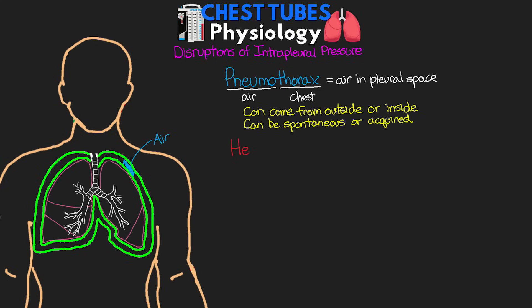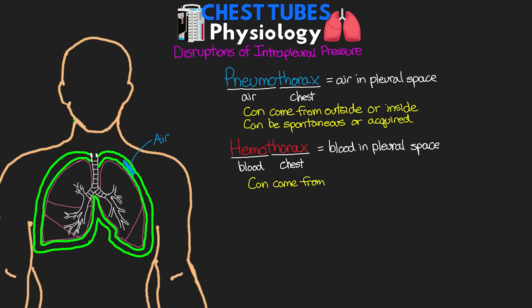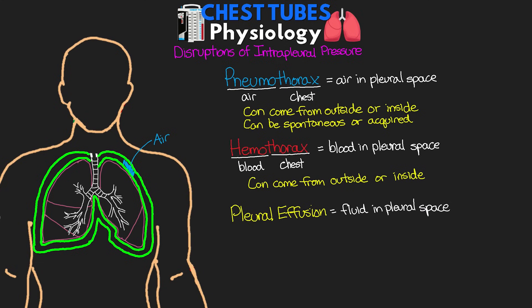The next disruption is our hemothorax. Heme means blood, and thorax is chest, so this is essentially blood in the pleural space. This blood can come from injury to the chest wall or to the lung tissue itself. And then the last disruption is our pleural effusion, which is essentially an accumulation of fluid in the pleural space — typically the buildup of normal pleural fluid, but this can also be fluid from different areas as well.